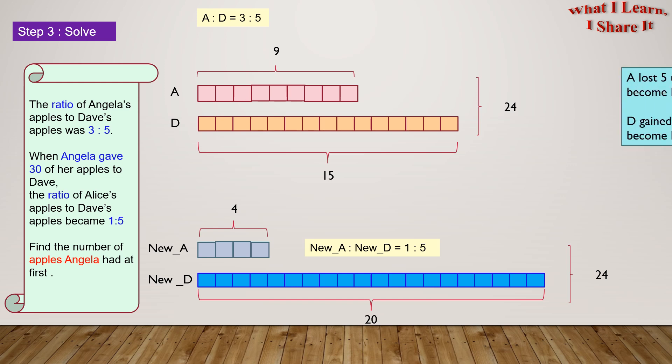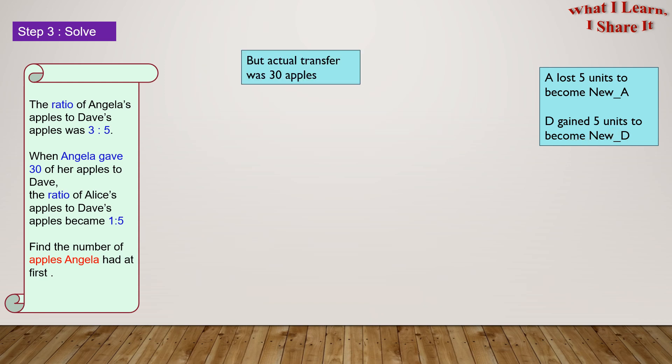This means A lost 5 units to become new A, and D gained 5 units to become new D. But the actual transfer was 30 apples! This means 5 units corresponds to 30 apples. One unit will correspond to 30 divided by 5 equals 6 apples.